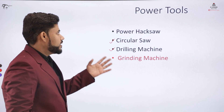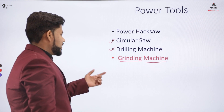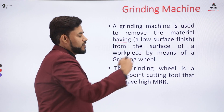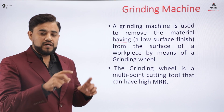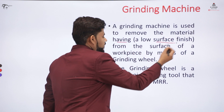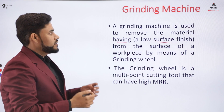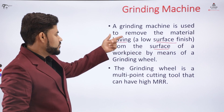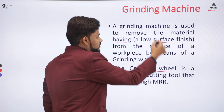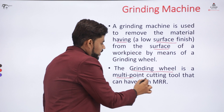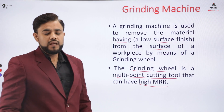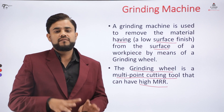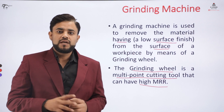The last power tool we will cover is the grinding machine. As the name suggests, the grinding machine is used to remove material from a surface that has a low surface finish. The grinding wheel, which serves as the tool, is a multi-point cutting tool with a high material removal rate. When the grinding wheel comes in contact with the workpiece, it creates a surface with a higher surface finish compared to the original.